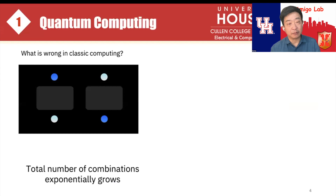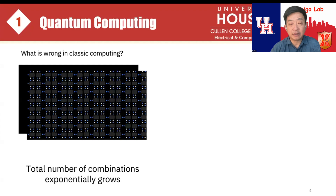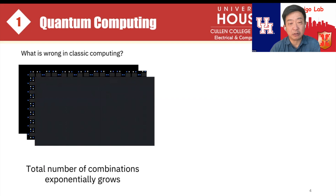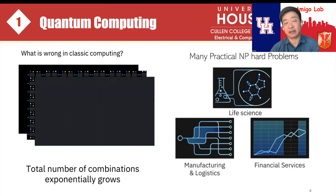Why quantum computing? What's wrong with classical computing? Suppose the number of combinations with a 2-bit case requires enumerating all four different cases. As the number of bits increases, the number of enumerations grows exponentially — with just thousands of bits, you cannot enumerate them all. There are many practical NP-hard problems in genomics, manufacturing, logistics, scheduling, and financial services that classical computers struggle to handle due to their combinatorial nature.